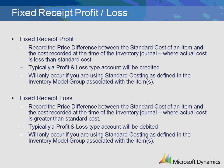The fixed receipt price profit transaction is the setup related to the price difference between the standard cost of an item and the cost recorded at the time of the inventory journal posting, where actual cost is less than the standard cost of the item. The Ledger account is typically a profit and loss type account and will be credited at the time of the inventory profit and loss posting. This transaction will only occur if you are using standard costing as defined in the inventory model group associated with the item.